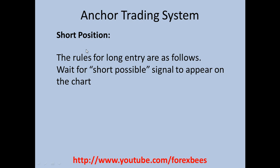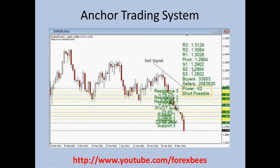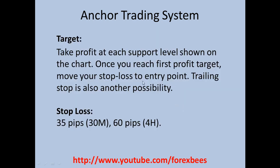For a short position, wait for a short possible signal to appear on the chart. The indicator gives a short possible signal at certain points. Whenever the short possible signal appears, enter a short trade. The target is to take profit at each support level. Once you reach the first support level, move your stop loss to the entry point. You can also use the trailing stop. The stop loss is 35 pips for a 30-minute chart and 60 pips for a 4-hour chart.